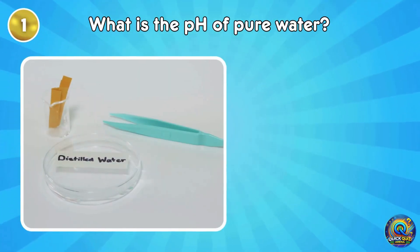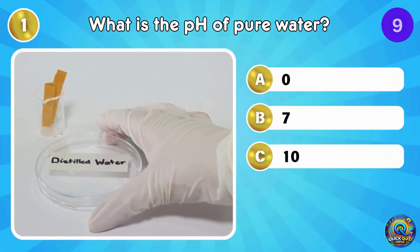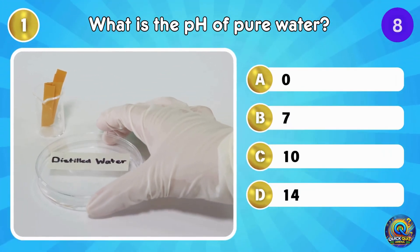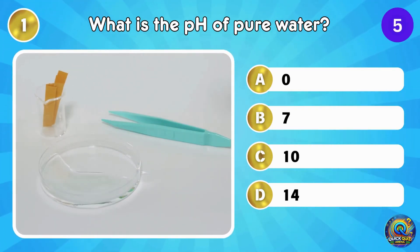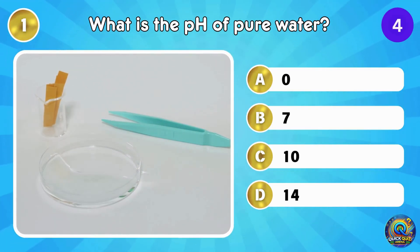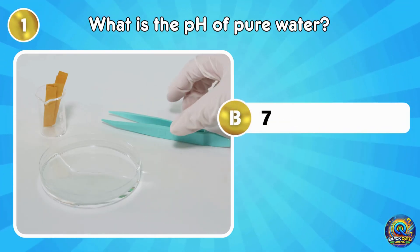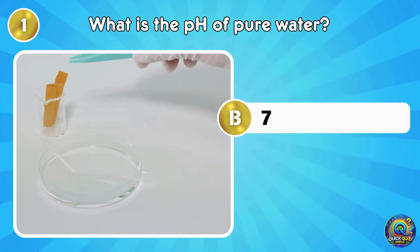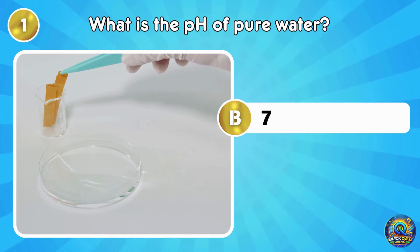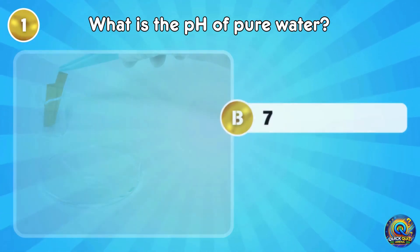What is the pH of pure water? Is it 0, 7, 10, or 14? The correct answer is 7 — just like how calm we all feel when drinking water. Pure balance. Let's see what's next.